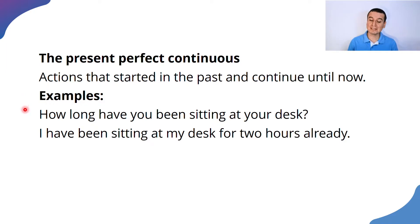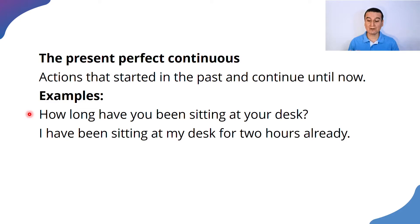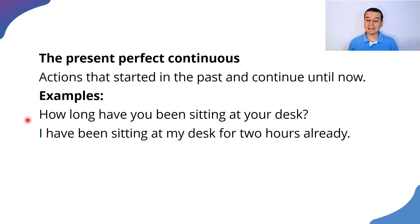Let's read the first example. It says: how long have you been sitting at your desk? As you can see, we have the auxiliary 'have.' If we're using 'have' with 'you,' we are using the plural form of have. How long have you? Then we have 'been sitting.' 'Been sitting' includes a form of 'be' and a verb in -ing.